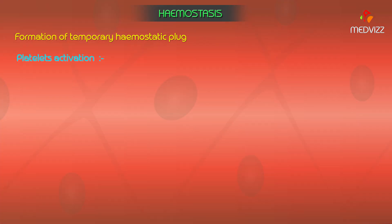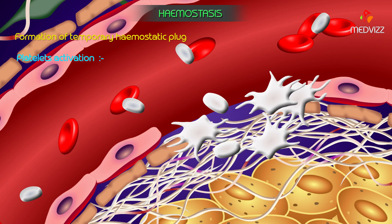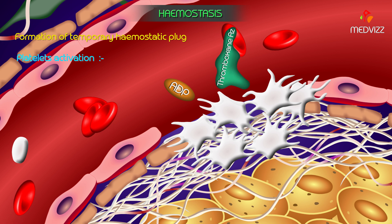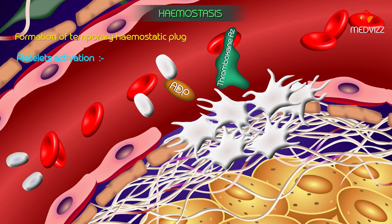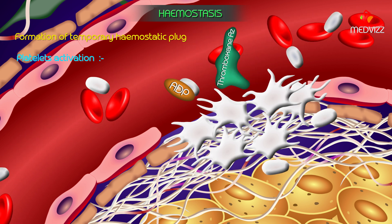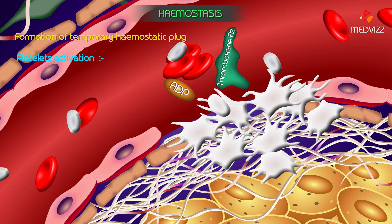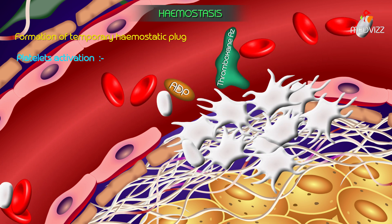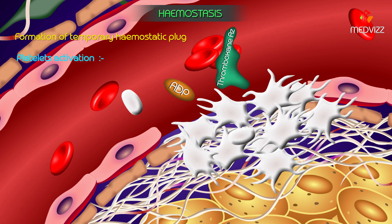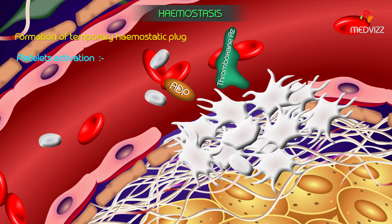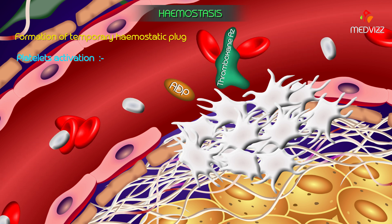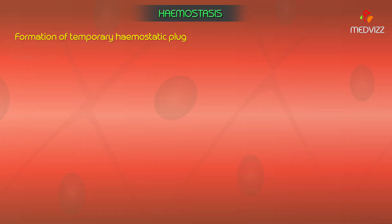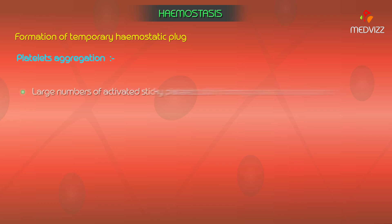Platelet activation: the platelets secrete large quantities of ADP and thromboxane A2, which act on nearby platelets and cause their activation. The stickiness of these additional platelets causes them to adhere to the originally activated platelets. In this way, a vicious cycle is initiated which leads to activation and adherence of a large number of platelets.